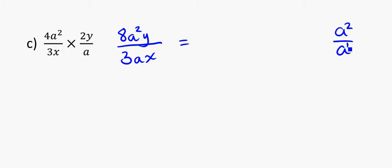a squared over a is really the same as a squared over a to the 1, and 2 minus 1 gets me 1. So I should be able to write this answer as 8ay over 3x, where the squared and the a on the bottom cancel there. They simplify to just 1a.